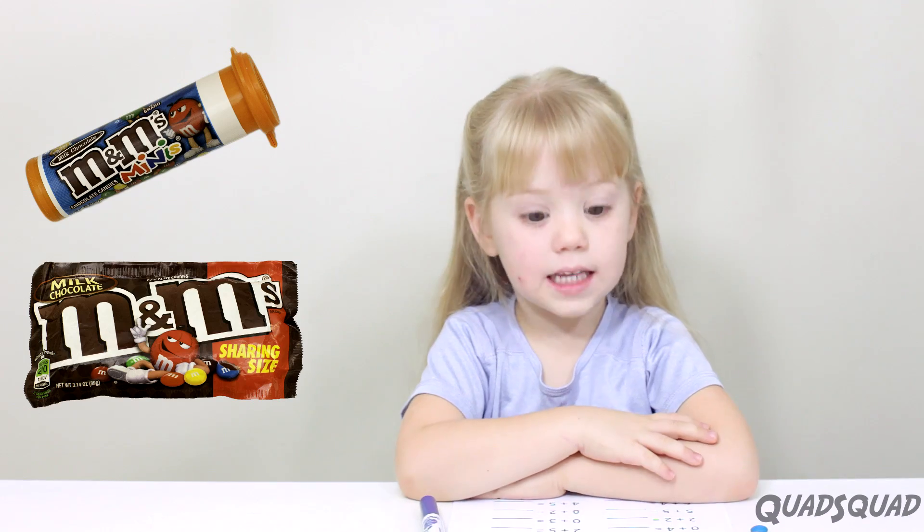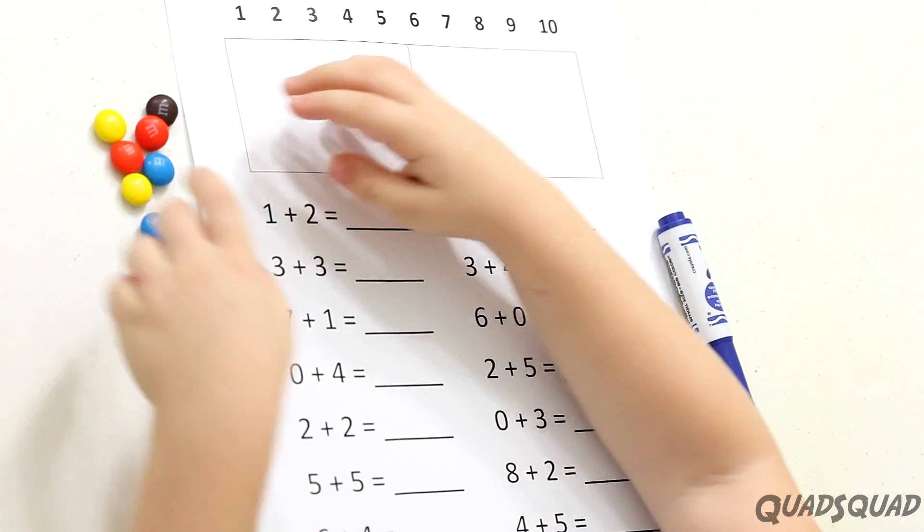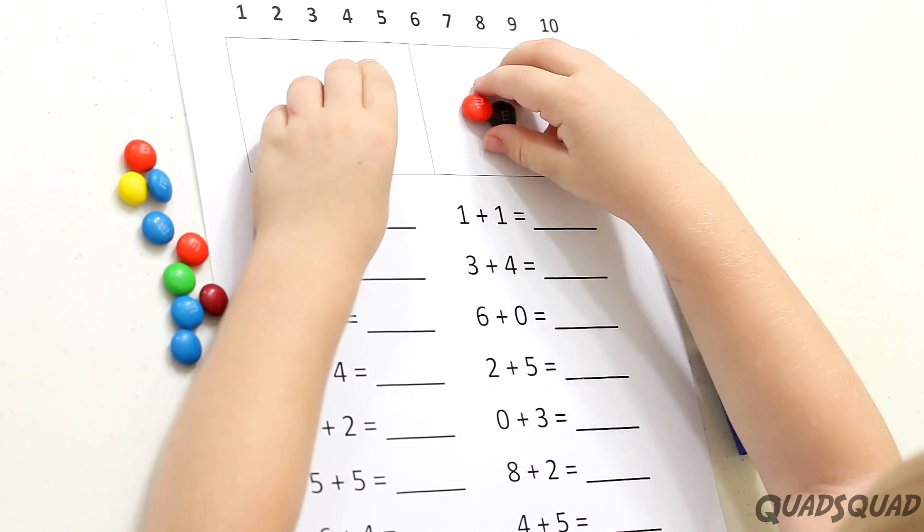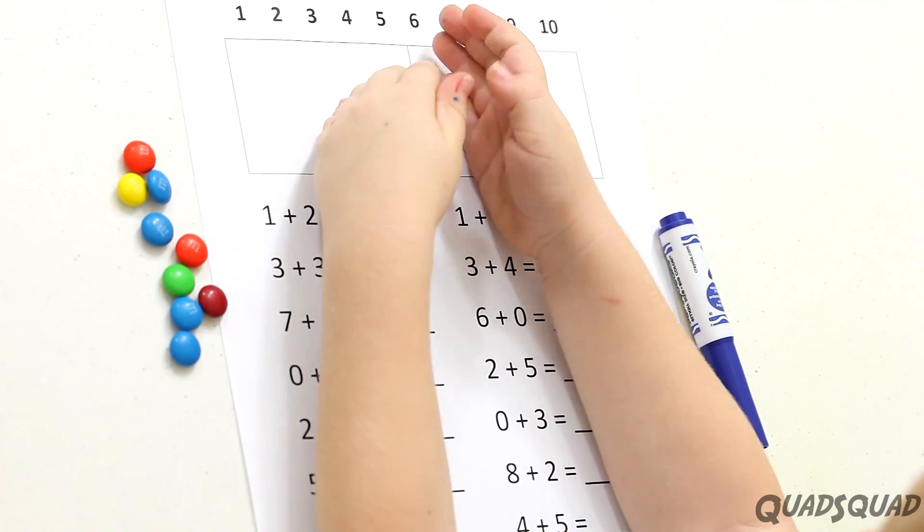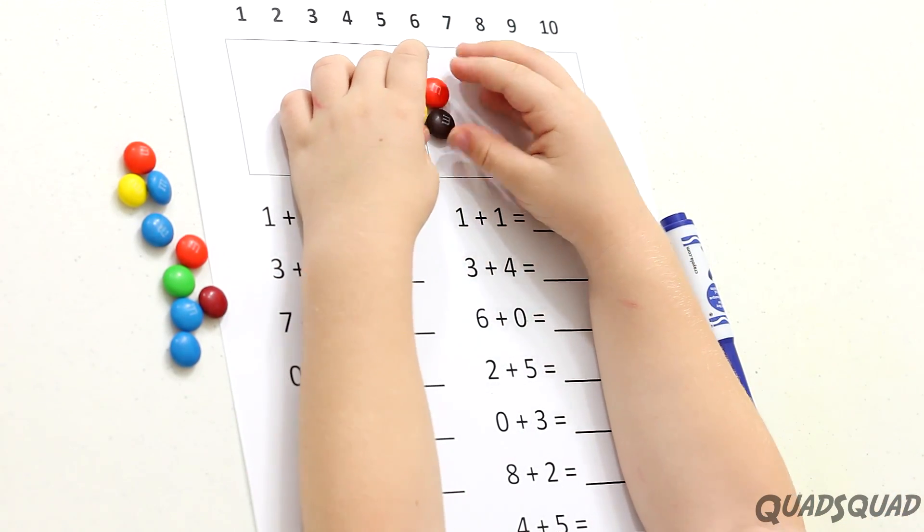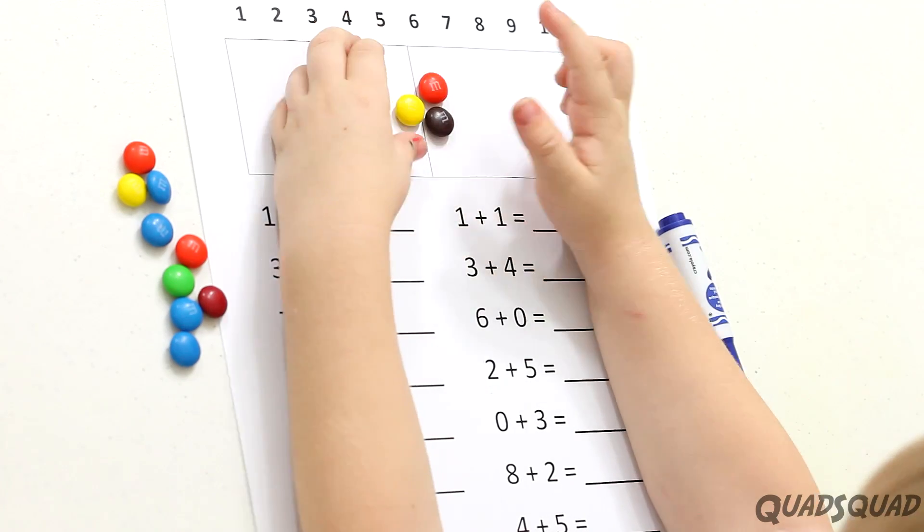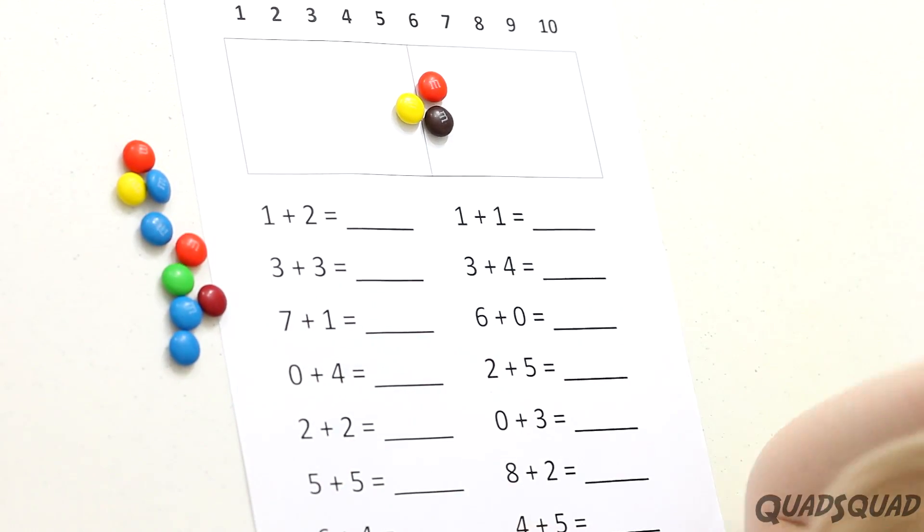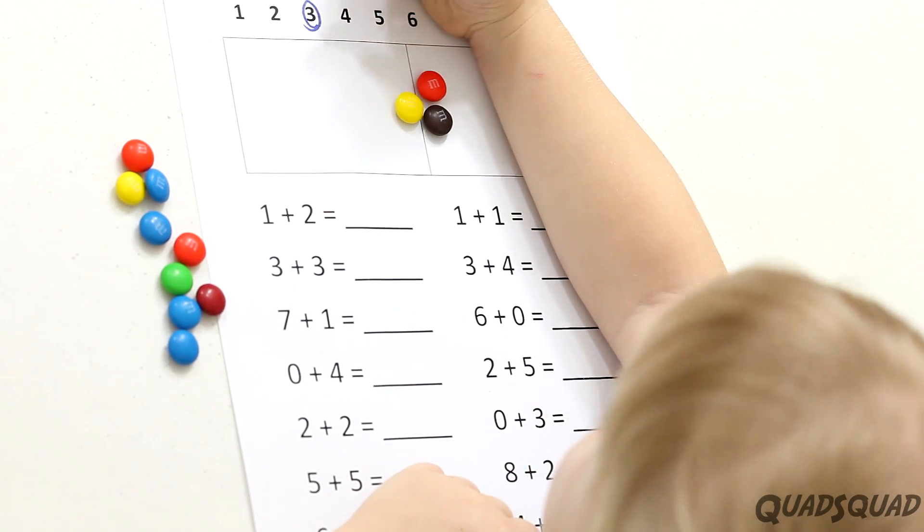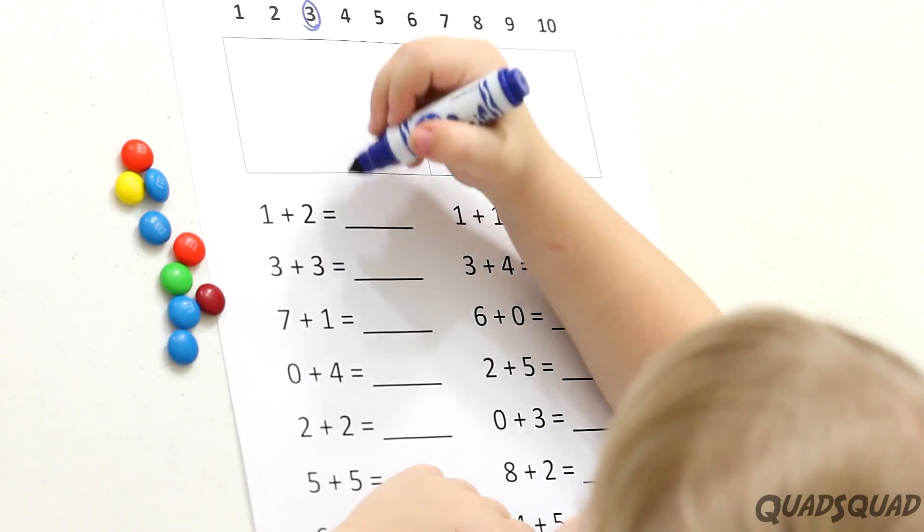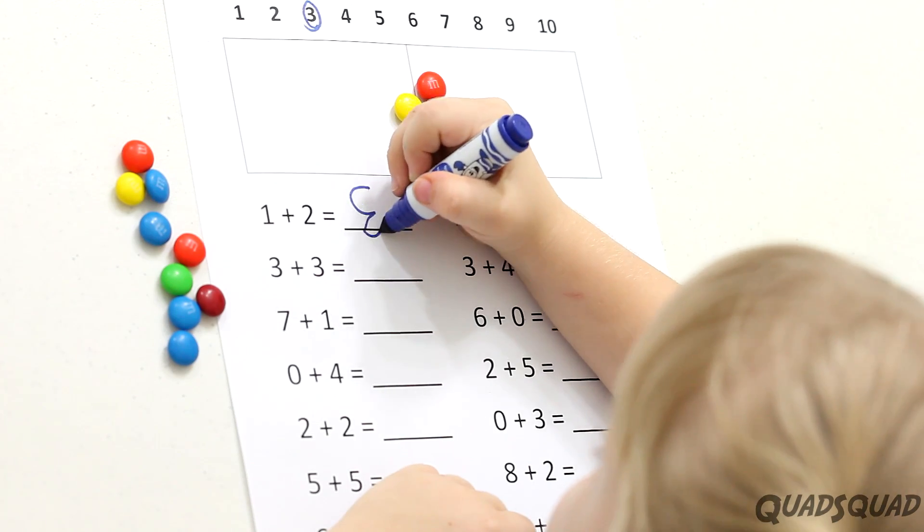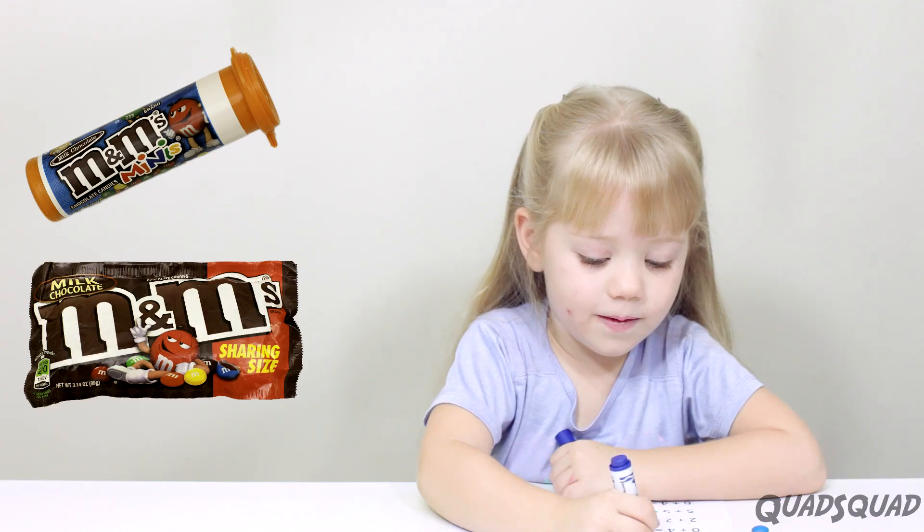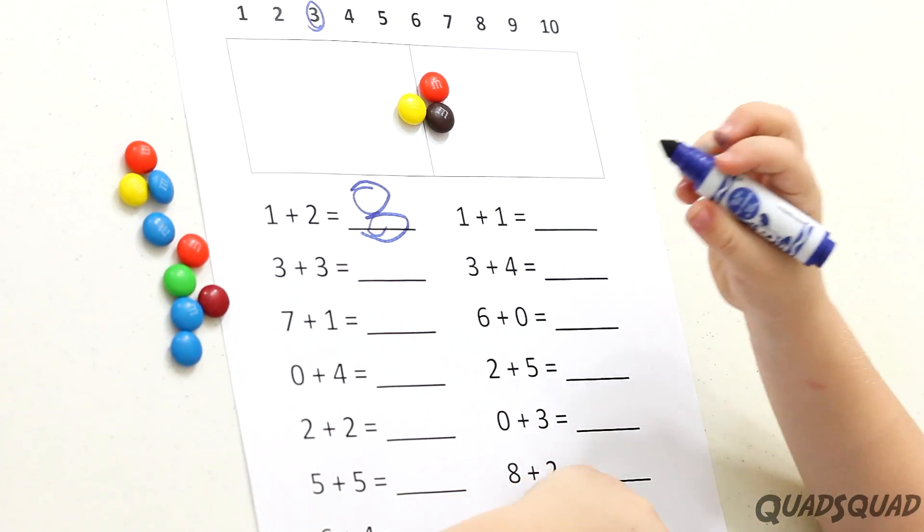The first question says one plus two. So I put one in here and two in here. Now we add them together. Now we count them. One, two, three. So this is my number three. So we've got to circle it. Now I put a three over here. Oh no, I did it backwards. I'll fix it.